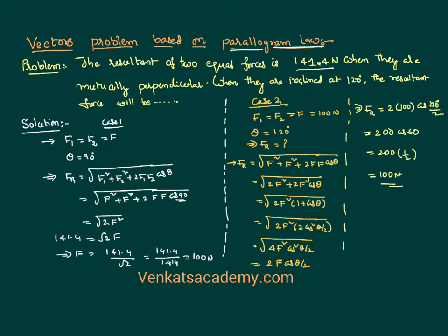So the resultant of the two vectors, the same vectors when they are having an angle separation of 120 degrees, is equal to 100 newtons. Thank you for watching, we will continue solving more problems in this lesson.